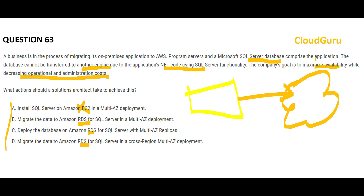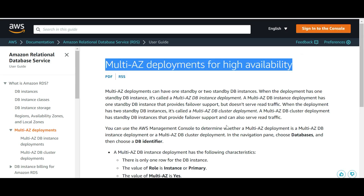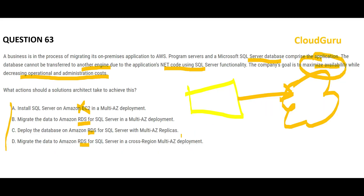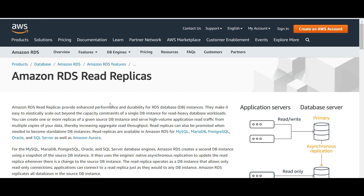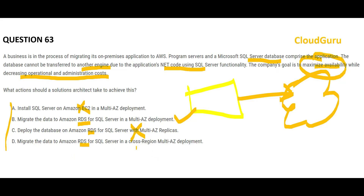Here's the thumb rule: whenever you see 'maximize availability,' the first option you should consider is Multi-AZ deployment for high availability. So B is the right answer. Option C talks about Multi-AZ read replicas — read replicas are a performance management solution for slow reads, not an availability solution. Option D talks about cross-region Multi-AZ deployment — you should first use your own region with Multi-AZ before going cross-region. So D is not the first option. The final answer is B.